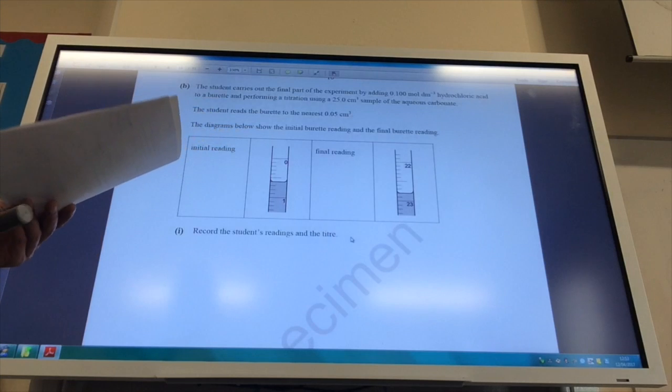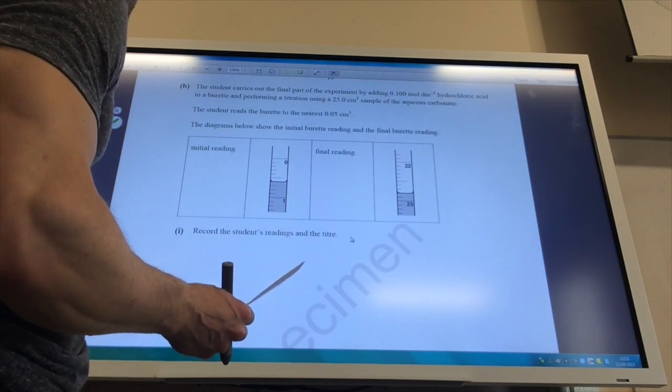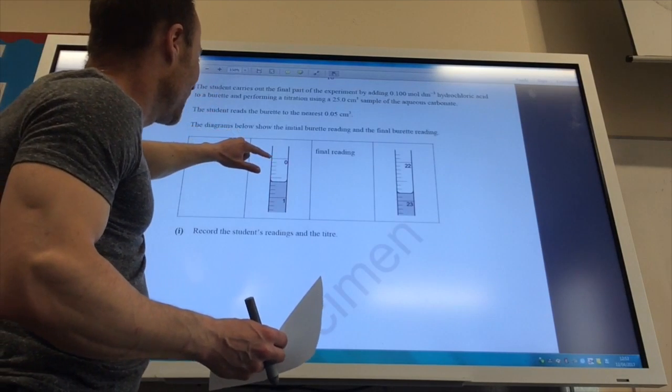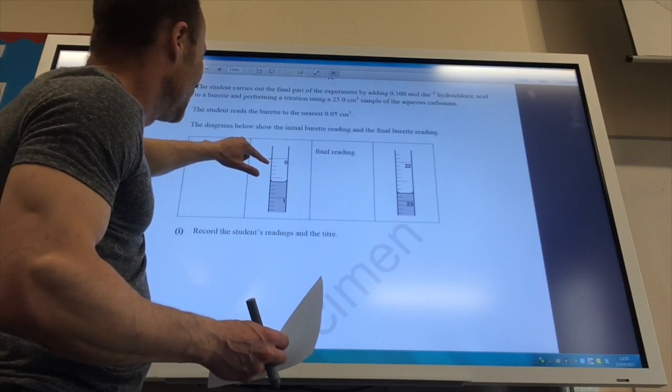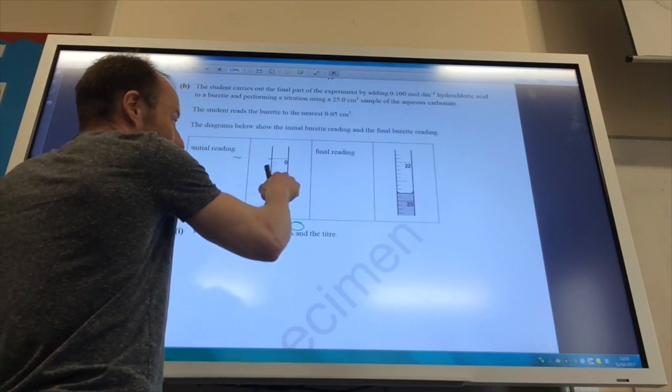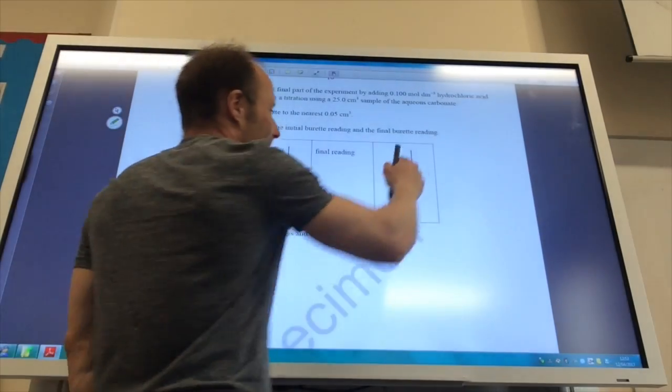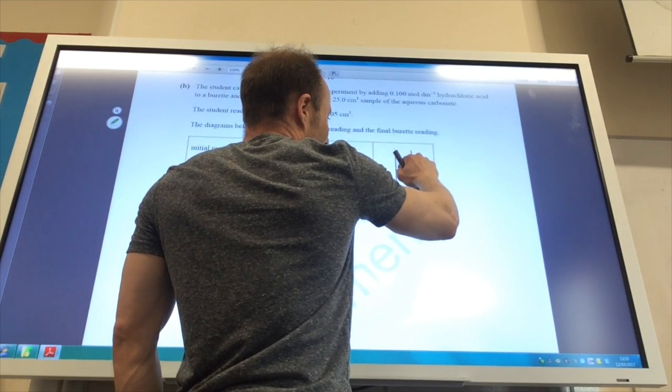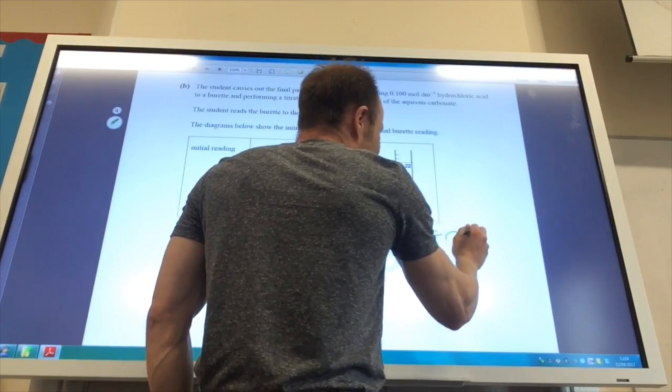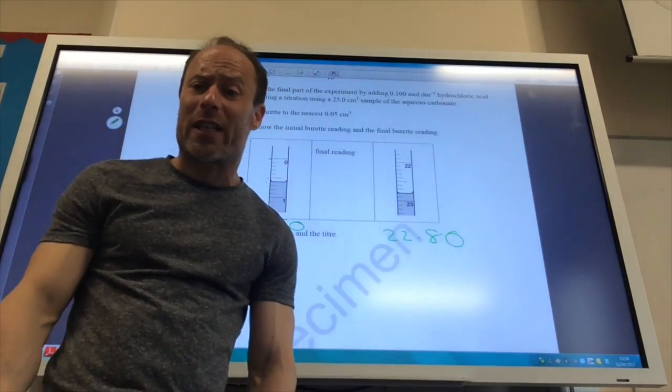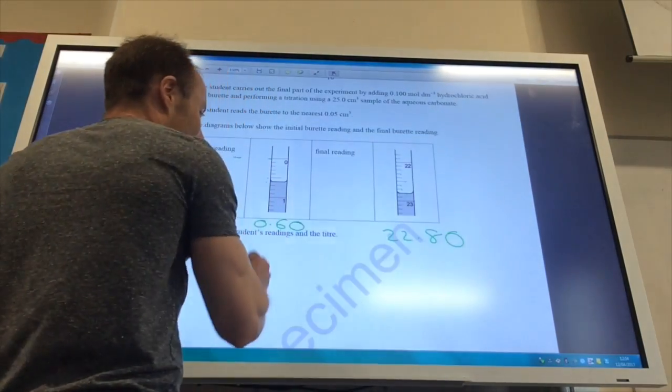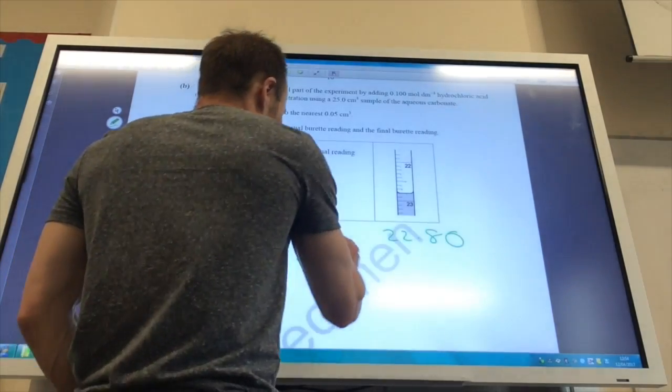They want me to read some readings on the burette. This is zero here. Remember it goes in 0.1. So that's 0.5 and that's 0.6, so that is 0.60. It's bang on that line. What about here? That's 22, the long line. 0.1, 2, 3, 4, 5, 6, 7, 8. So that is 22.80. Remember that final decimal place is either a 0 or a 5. And then the titer is that minus that, which is going to be 22.20.